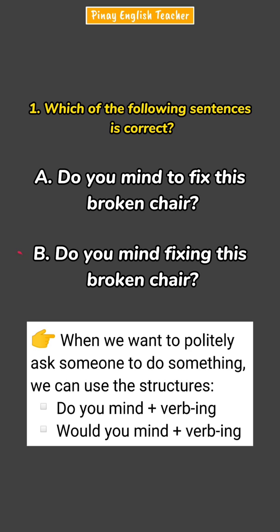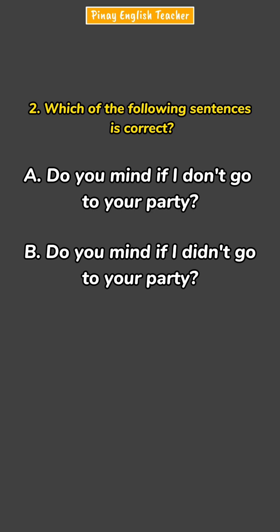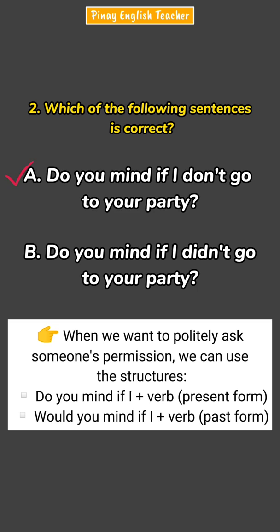Number 2 — which of the following sentences is correct? Letter A: 'Do you mind if I don't go to your party?' Letter B: 'Do you mind if I didn't go to your party?' The correct answer is letter A — 'Do you mind if I don't go to your party?' Remember that when we politely ask someone's permission, we can use 'Do you mind if I' plus a verb in the present form, or 'Would you mind if I' plus a verb in the past form.